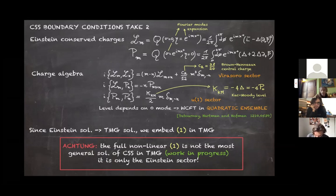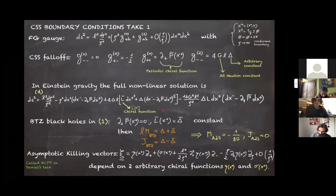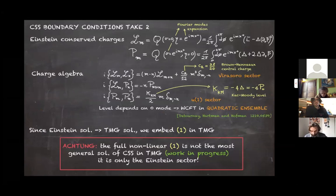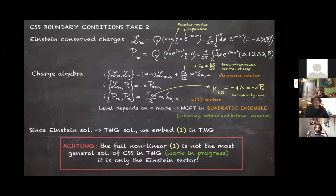Here comes a very important assumption in our construction. We consider the CSS non-linear solution and simply embed it into TMG. This is an assumption because we don't yet know the most general solution of CSS boundary conditions in TMG — that is work in progress. What we did is take the Einstein sector and embed it into TMG, and show how TMG dynamics affects these boundary conditions and the non-linear solution.